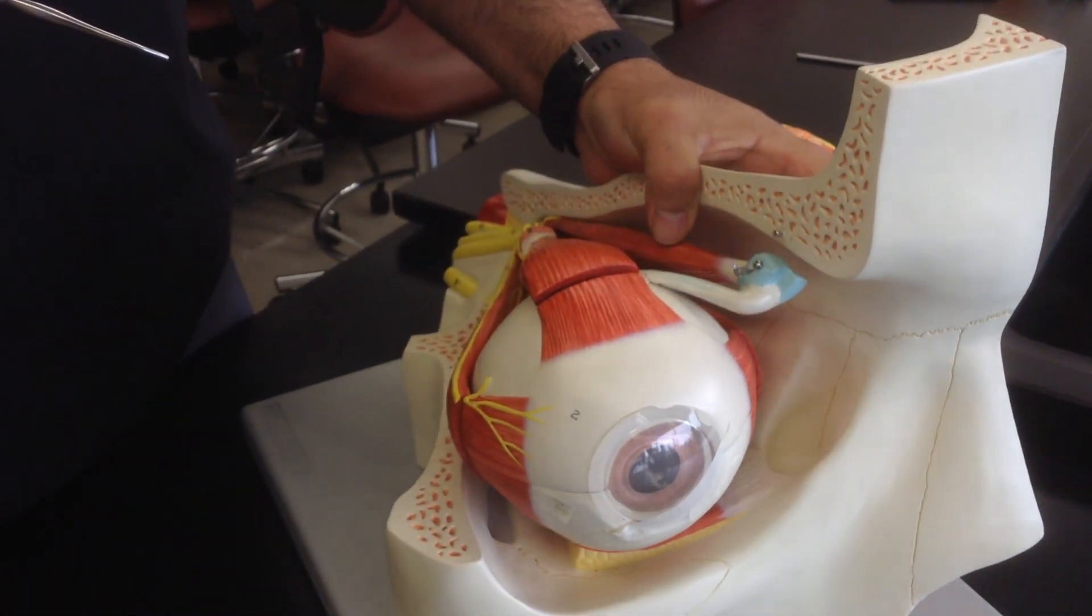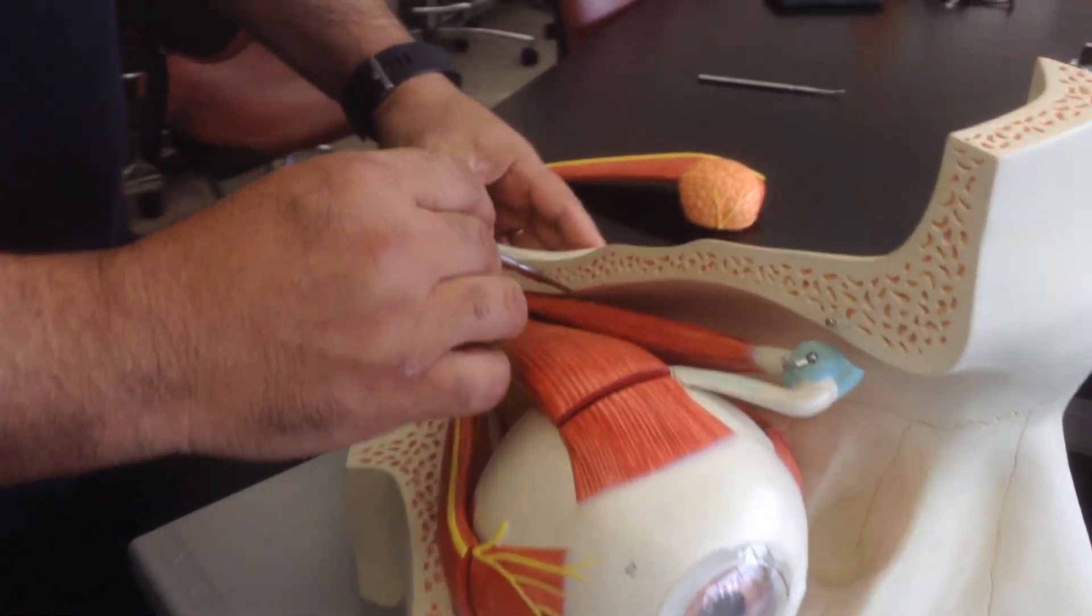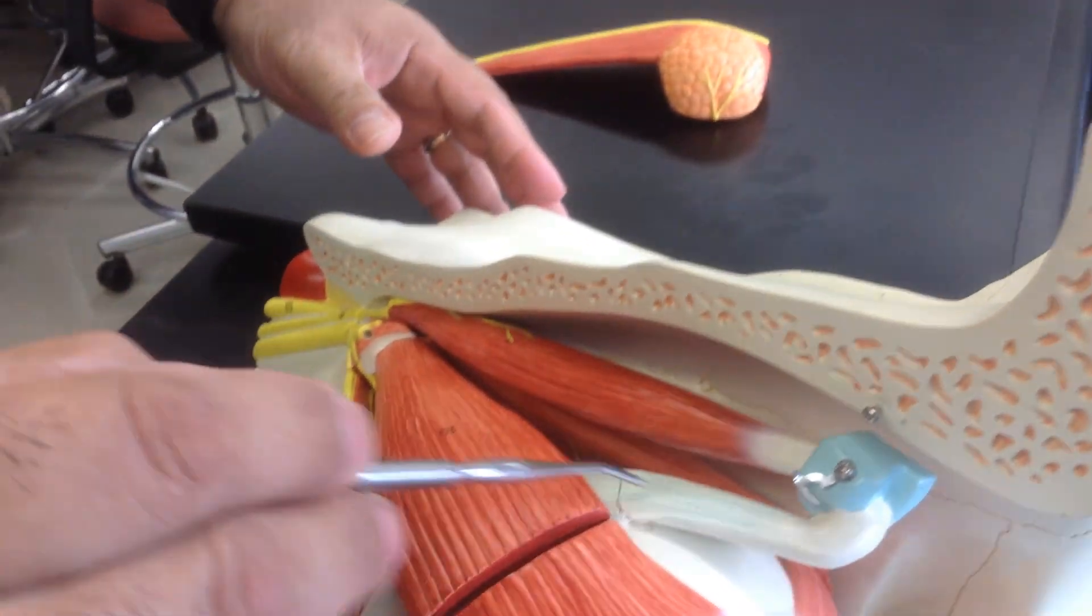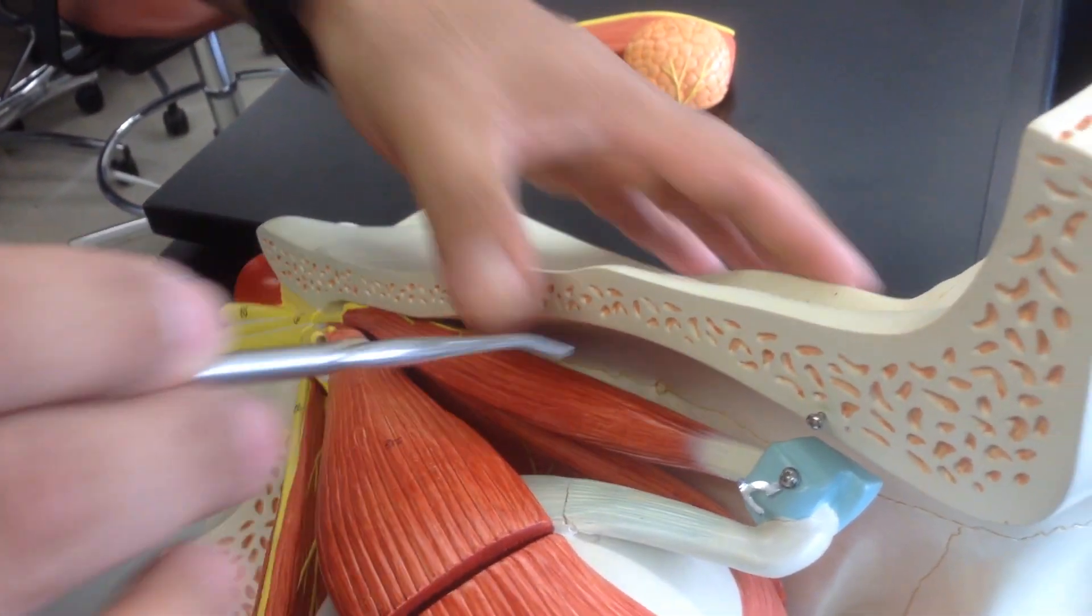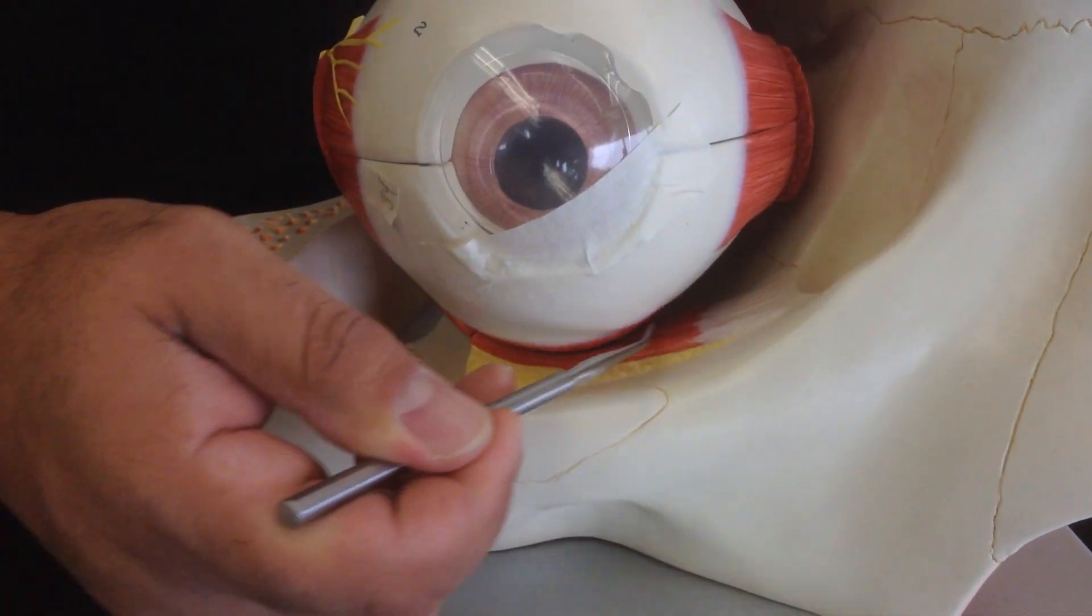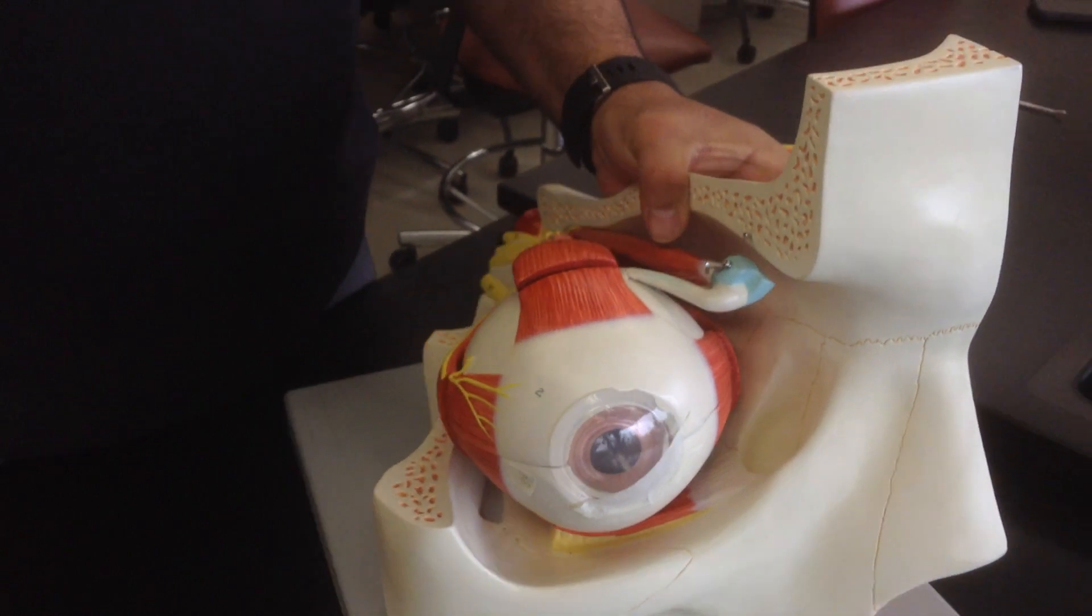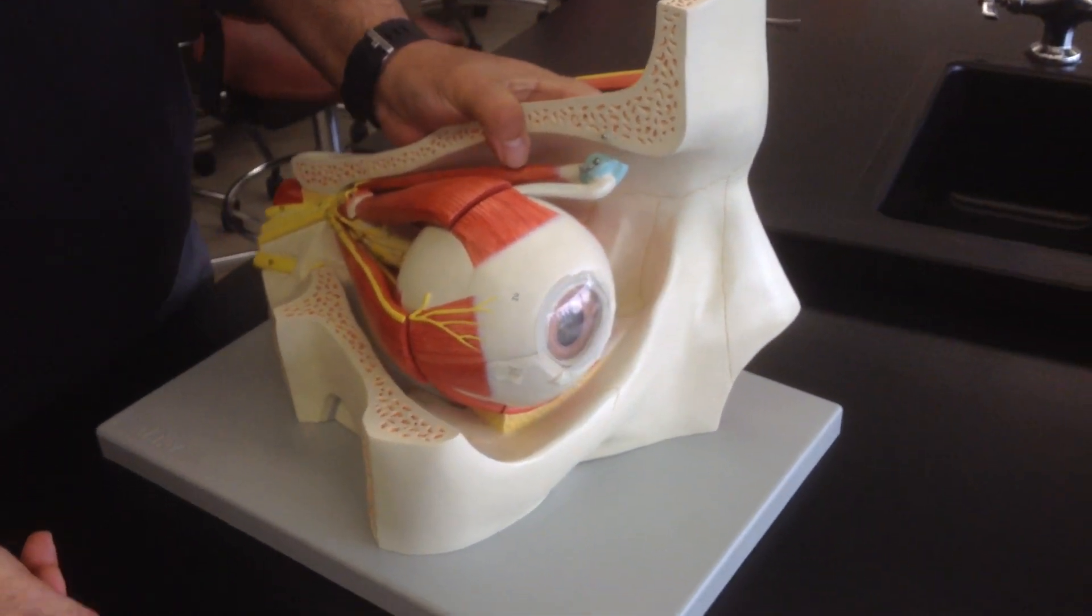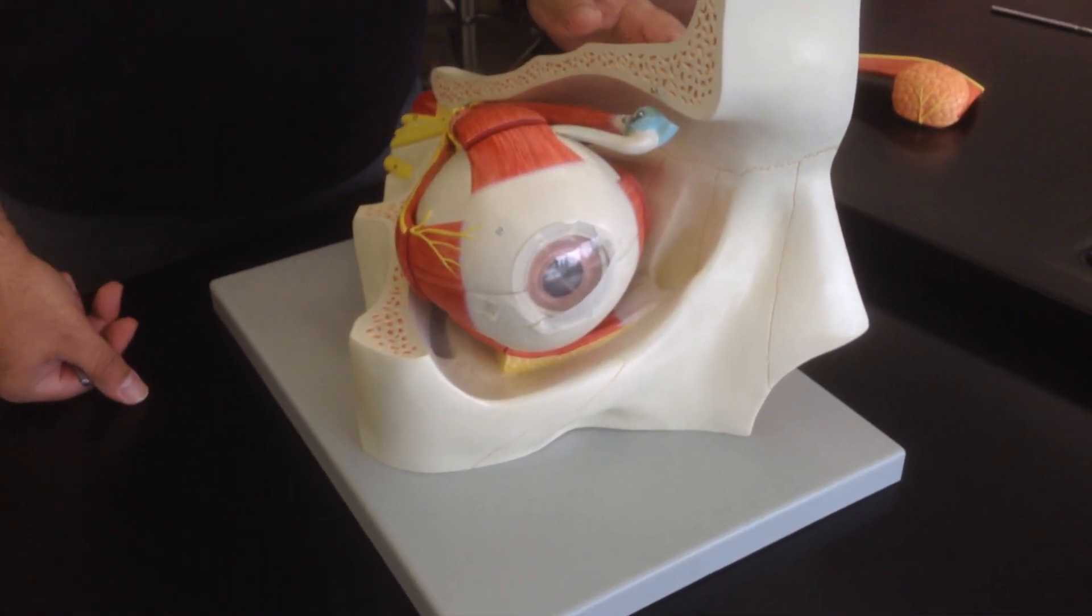Then we have two oblique muscles. You see here, this is the superior oblique muscle. And the inferior oblique muscle you can see here, it sits obliquely right in this section. These are the six muscles that allow us to move our eyes in different directions.